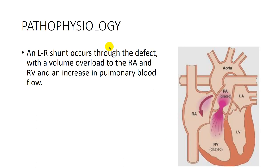In the case of ASD, there is a left-to-right shunt at the level of the atrium. Blood comes from the left atrium, passes to the right ventricle, then is pushed to the pulmonary artery and pulmonary circulation. So there is excess volume of blood on the right side of the heart and excess pulmonary blood flow.